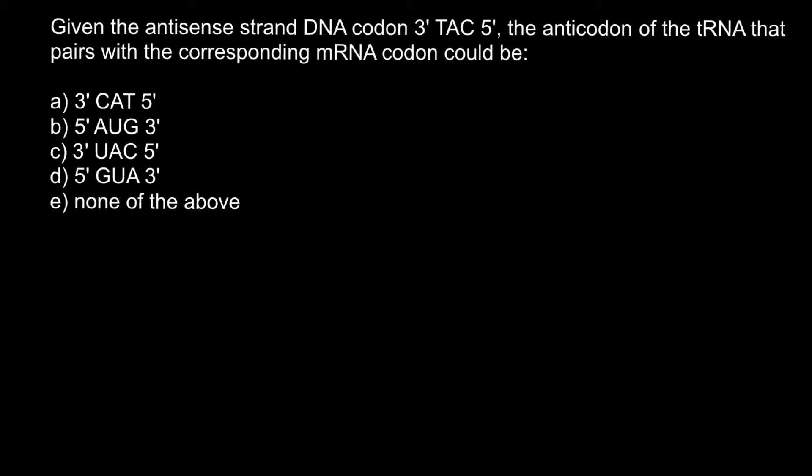Hello and welcome to Nikolai's genetics lessons. Today's video is going to be about molecular genetics. Here's a problem: given the antisense strand DNA codon, find the anticodon of the tRNA that pairs with the corresponding mRNA codon. There are five answers to choose from. You may stop the video here, try to solve this problem on your own first, and when you are ready, run the video again to compare your answer with my explanation.